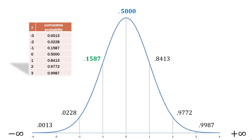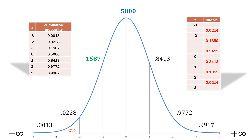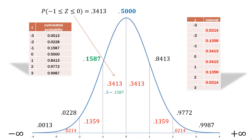What if we want to find the area of the interval between each section? We found the cumulative up to each point; now we want the probability between sections. That's just simple subtraction — subtract the higher cumulative value minus the lower one. For example, to find the probability between negative one and zero, we take 0.5 minus 0.1587, which gives us 0.3413. So the probability of Z between negative one and zero is 0.3413.